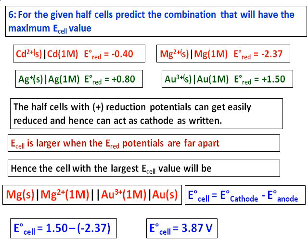As a practice question, find out which combination will have the least cell potential value — that is, which cathode and anode combination gives the minimum cell potential.